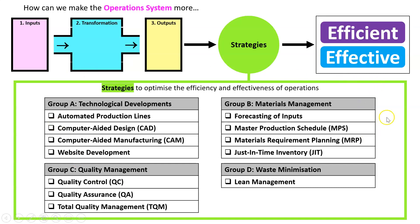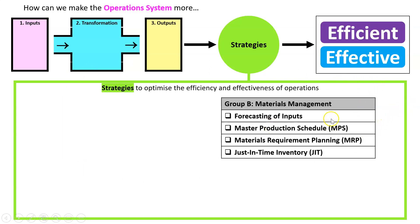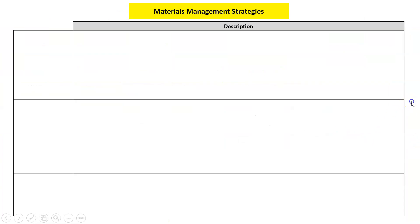We've got all these strategies and we're looking at this group here. We've got forecasting of inputs, master production schedule, and materials requirement planning. These are things you don't want to talk about unless you get asked because they're so difficult to explain. And then we've got one of the most useful topics in the course which we do want to use if we get asked, which is just-in-time inventory or JIT. We need to be able to describe each one.